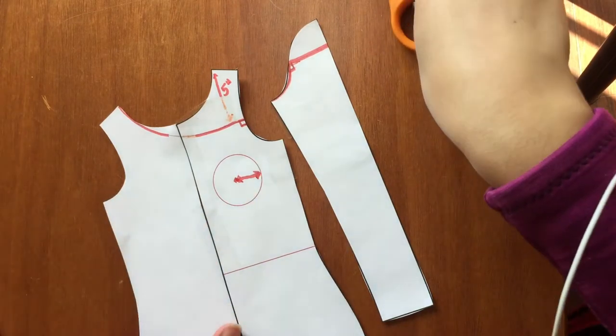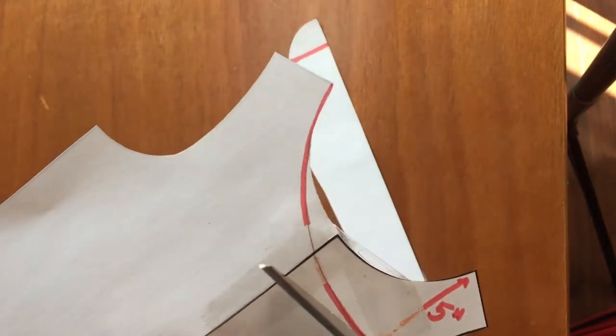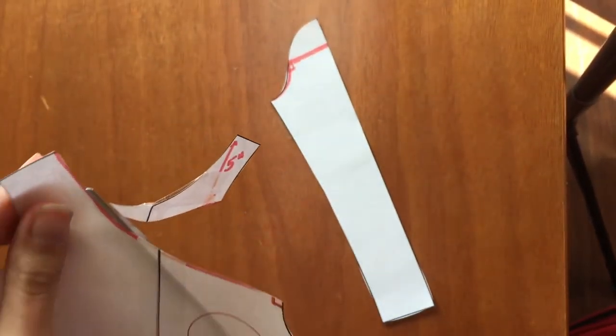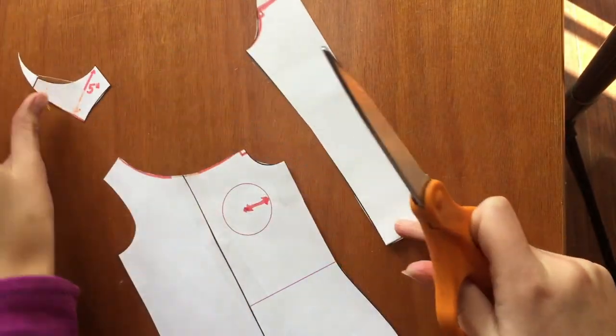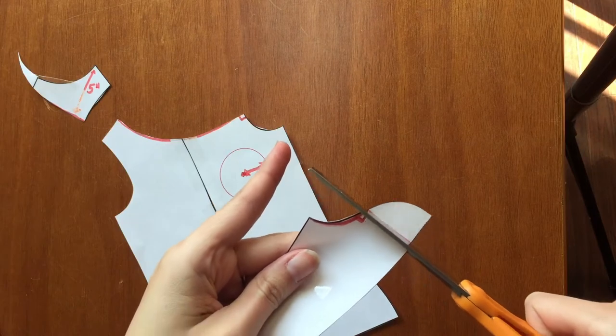So once you've got it all drawn out, what you're going to do is go ahead and cut it off. So there's our front pattern piece and here's our sleeve.